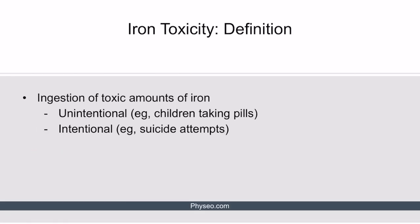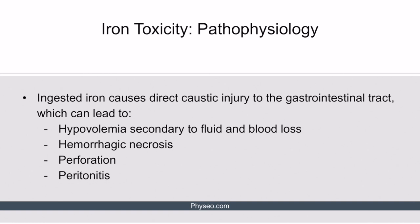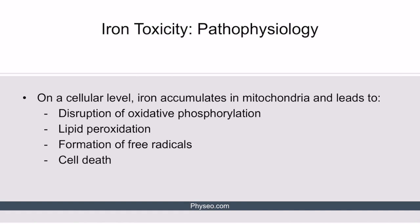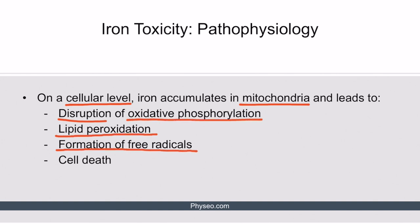Iron toxicity is defined as ingestion of toxic amounts of iron, either unintentionally — such as when children take their parents' pills — or intentionally, such as in a suicide attempt. When ingested in high amounts, iron causes direct caustic injury to the GI tract, which can lead to hypovolemia secondary to fluid and blood loss, and also to hemorrhagic necrosis, perforation, and peritonitis. Systemically, iron accumulates in mitochondria, leading to disruption of oxidative phosphorylation, lipid peroxidation, formation of free radicals, and eventually cell death.